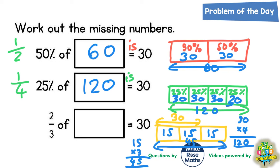45, so that's the missing answer there. 45. Two thirds of 45 is 30.